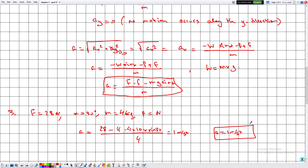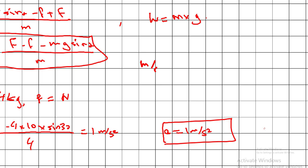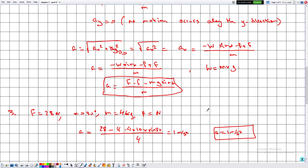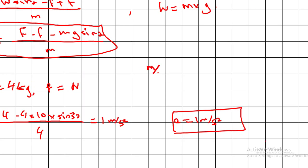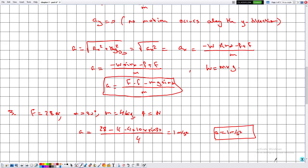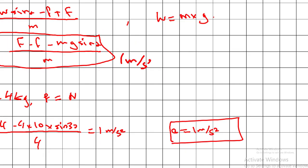The acceleration is 1 m/s². This means the speed of the object increases by 1 m/s every second. Written out: 1 m/s² = 1 m/s per second, so each second the speed increases by 1 m/s.